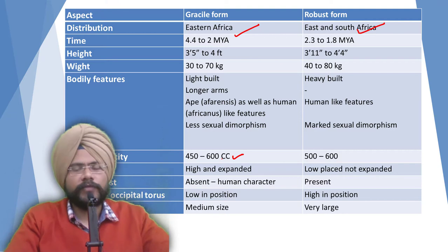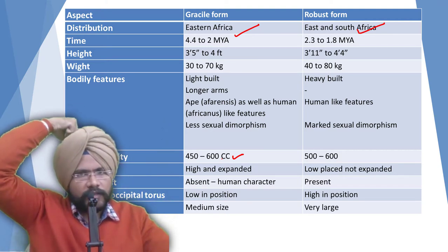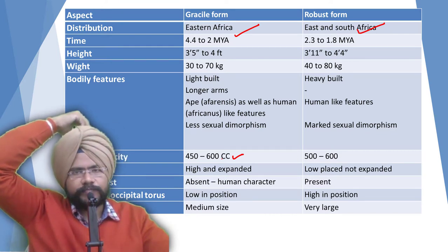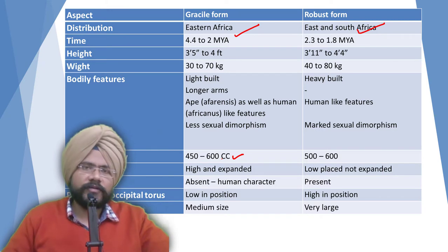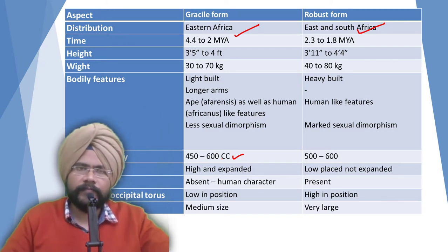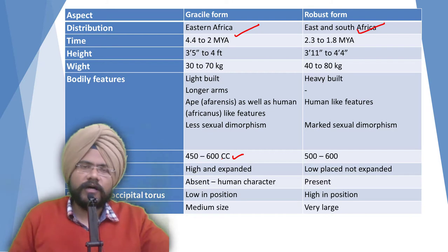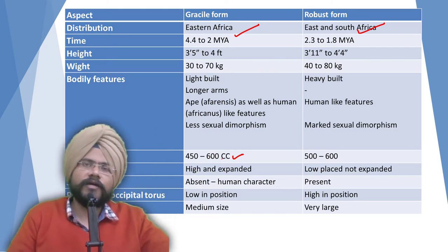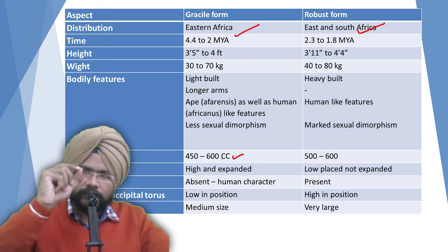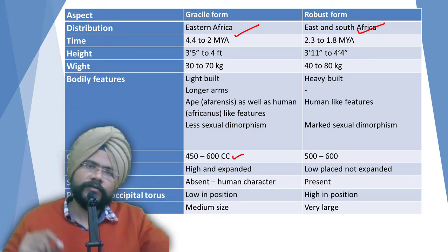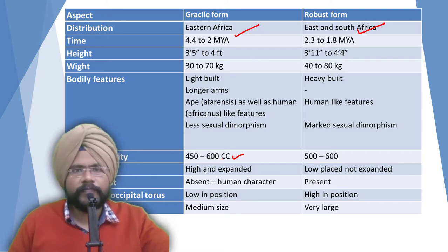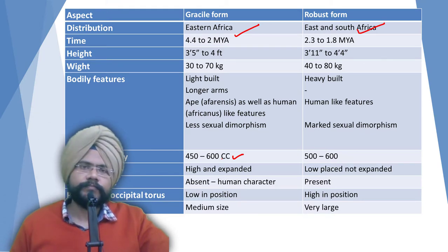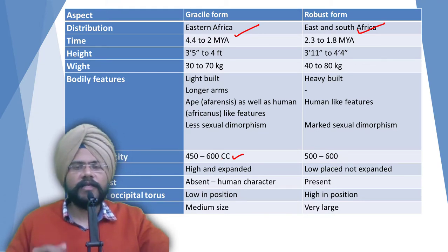Muscles need to be fixed somewhere. For example, the thigh muscles are fixed with the linea aspera, which is an anatomical structure on the back side of the femur (thigh bone). You can google that and find a diagram of it.